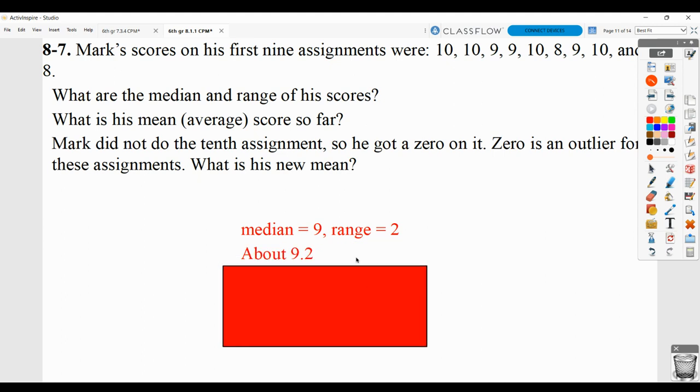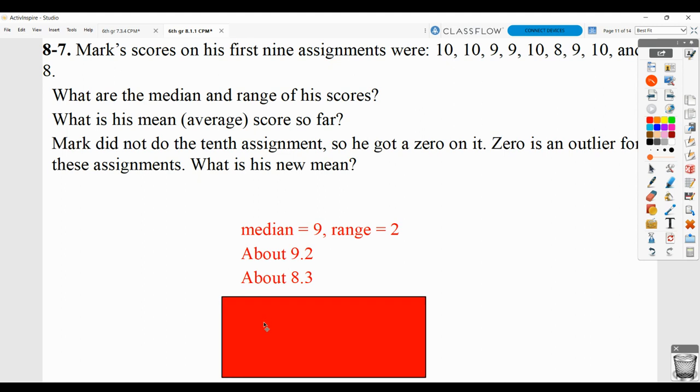The mean, show what you put in the calculator, which is that you're adding all these values, getting the total, and then dividing by 9. And then they've rounded that to the nearest tenth. Now if you add a 0, you're taking that same total but dividing by 10 scores instead of 9 scores, and you end up getting about 8.3.